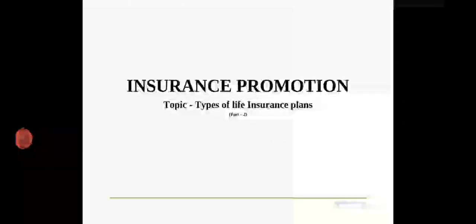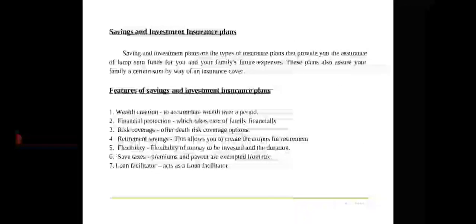Hi everyone. In this video we are going to learn about the remaining various types of life insurance plans, the documents required for purchasing life insurance, and the various documents required for life insurance claims and settlements. We have discussed some types previously like term plans, whole life insurance, money back, and endowment plans. The remaining savings and investment insurance plans, retirement plans, child insurance plans, and ULIPs — unit linked investment plans — are explained in this video.